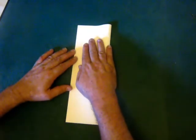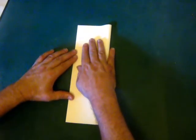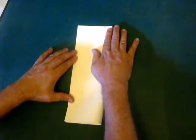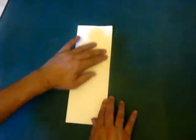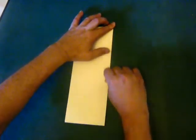The first step is going to do a modified water bomb base. The first step is to fold it in half lengthwise. Put a nice good solid press down there.